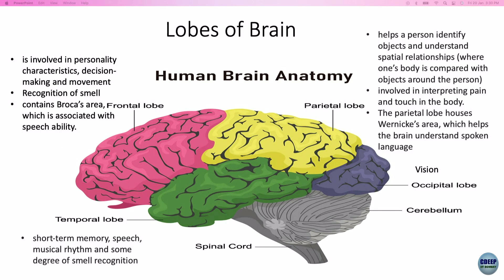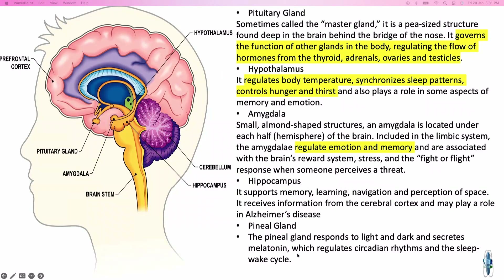The occipital lobe is involved in vision. The temporal lobe is involved in short-term memory, speech, musical rhythm, and some degree of smell recognition. You also have the cerebellum and spinal cord. These are the four lobes and their basic functions.